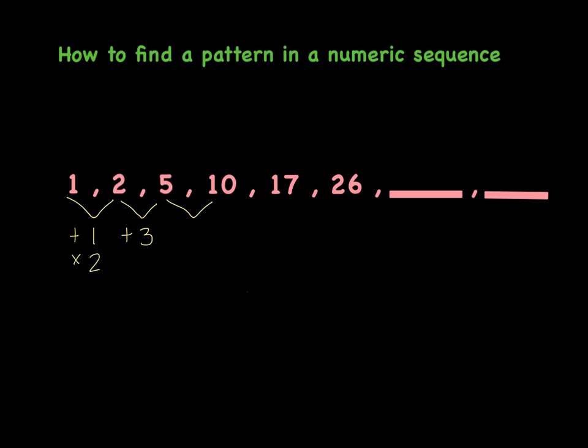But to go from 5 to 10, I could add 5 or multiply by 2. And to go from 10 to 17, I could add 7, probably not multiplying. And to go from 17 to 26, I could add 9.